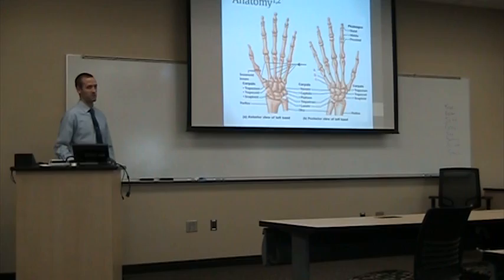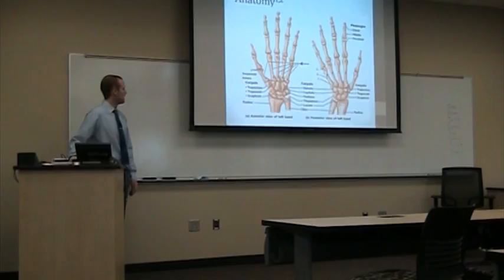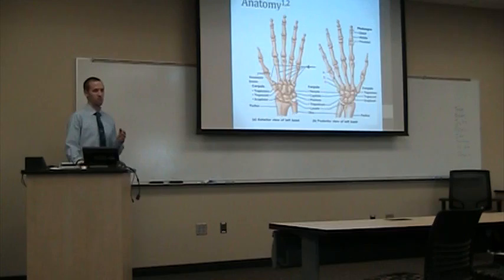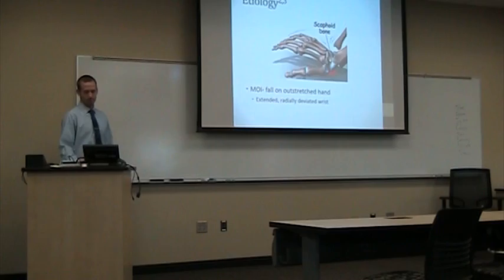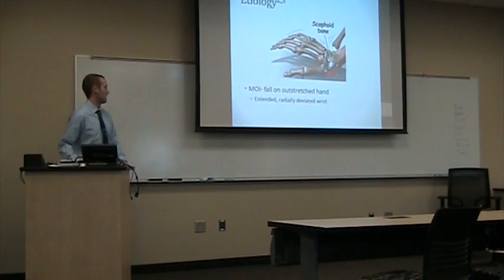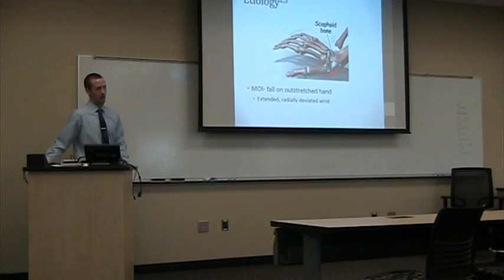First, the anatomy. You can see all the metacarpal bones. The scaphoid in the anterior view sits right there — you can see that in the anterior-posterior view as well. Some unique characteristics of the scaphoid is that it actually articulates in both the distal and proximal row of metacarpal bones, and its long boat shape and kinematics when you move into extension put it at high risk for fractures.